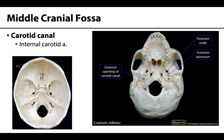Before leaving the middle cranial fossa, it is important to discuss how the internal carotid artery enters the skull, which is easiest to view from an inferior view. You can clearly see the external opening of the carotid canal in the temporal bone, as well as the foramen ovale and foramen spinosum. The internal carotid artery enters the middle cranial fossa through a region associated with the foramen lacerum, then enters the cavernous sinuses located on either side of the body of the sphenoid.